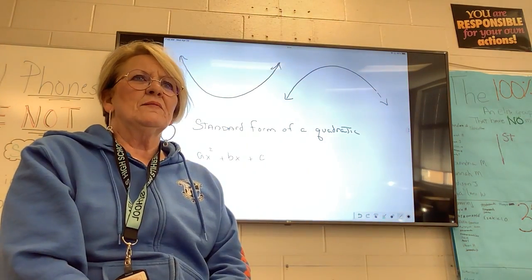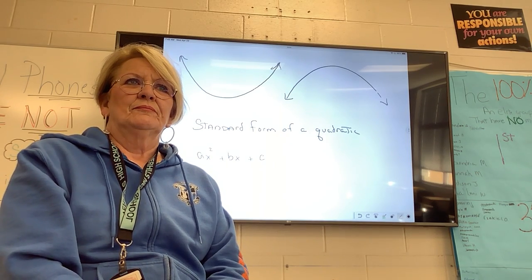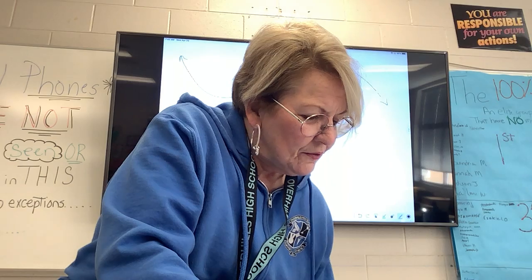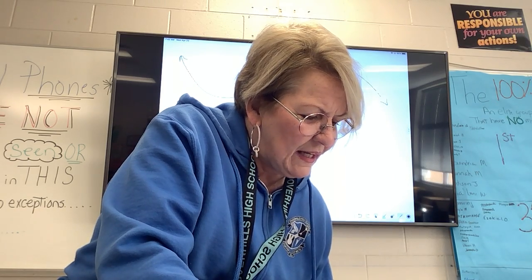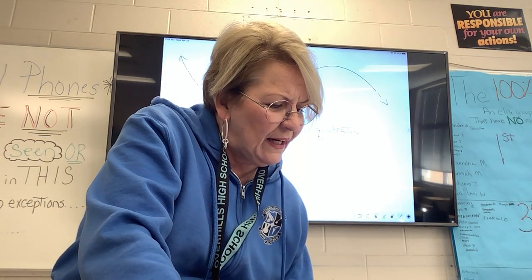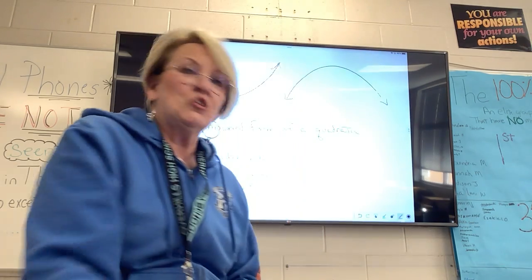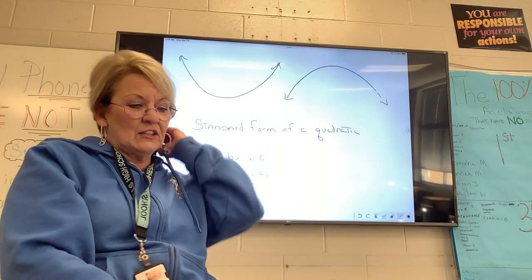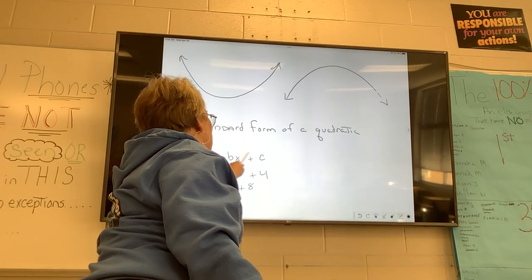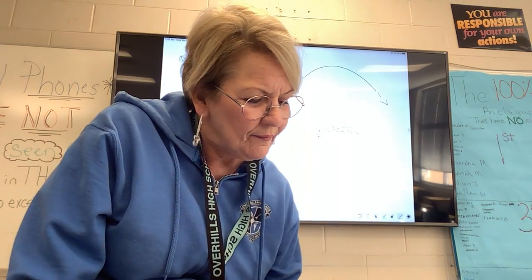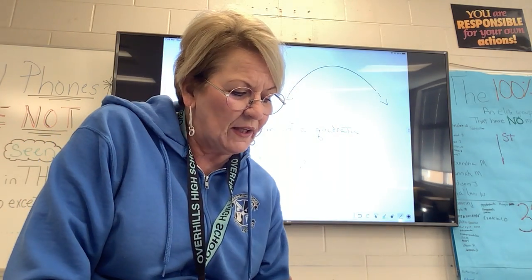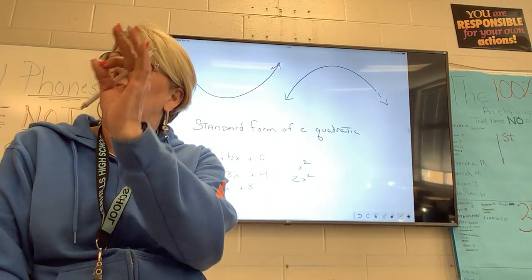Standard form is AX squared plus BX plus C. What might it look like? It might look like 2X squared plus 3X plus 4. It could look like negative X squared minus 2X plus 8. As long as it has a squared term — it could just be X squared, or 2X squared. As long as it has that square, it's quadratic.